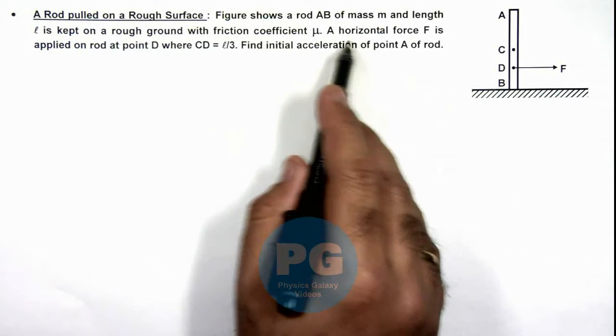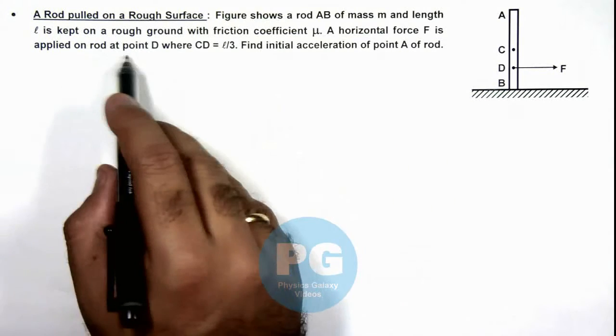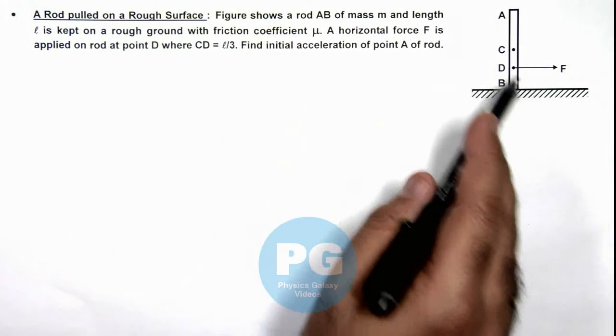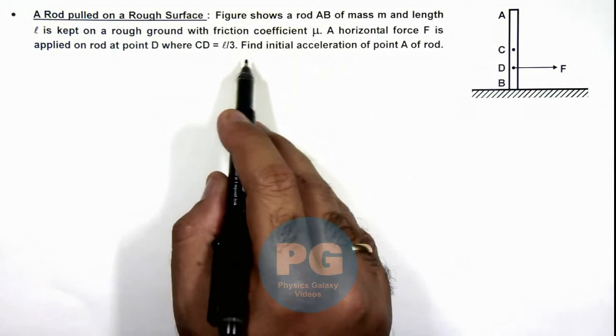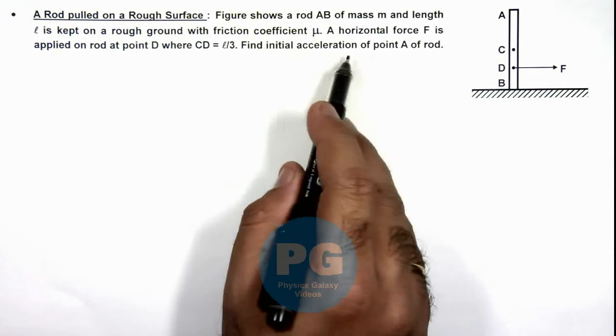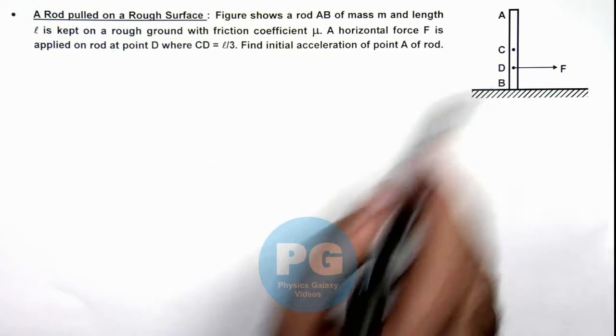And a horizontal force F is applied on rod at point D, where the length CD is equal to l by 3. We are required to find the initial acceleration of point A of the rod.